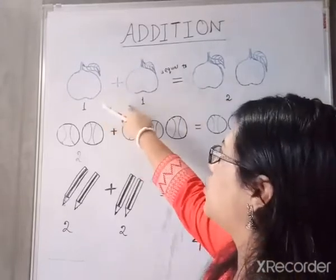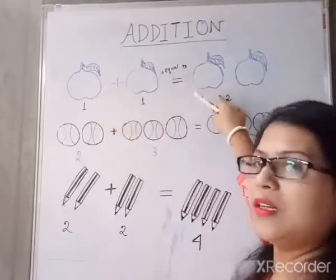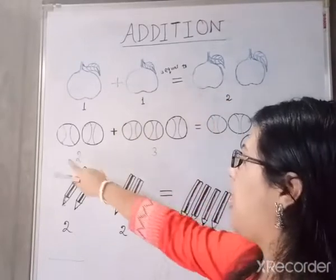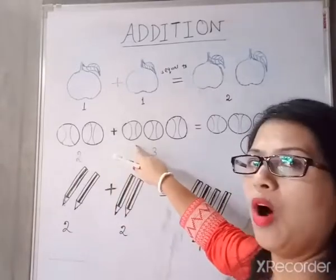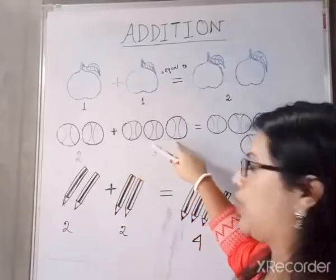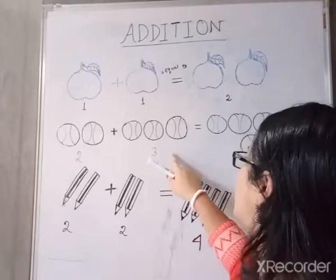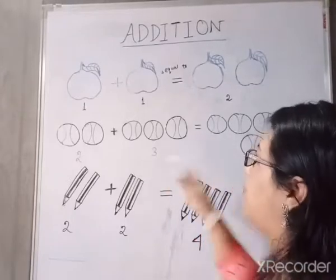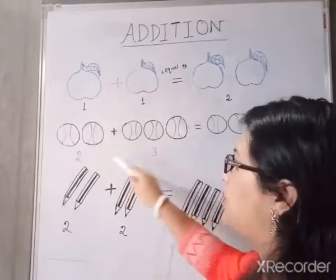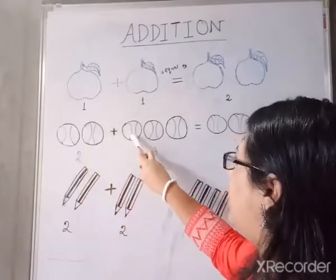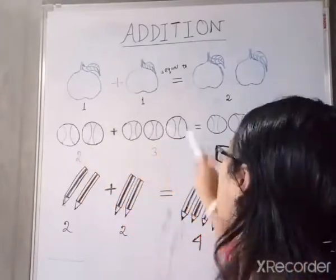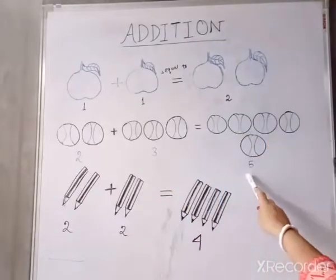Same here I have drawn 2 balls plus how many balls I have drawn here? 1, 2, 3. 3 balls I have drawn. How much is the answer we will get? We will count these 2 things together. 1, 2, 3, 4, 5. Here we are getting 5 balls.